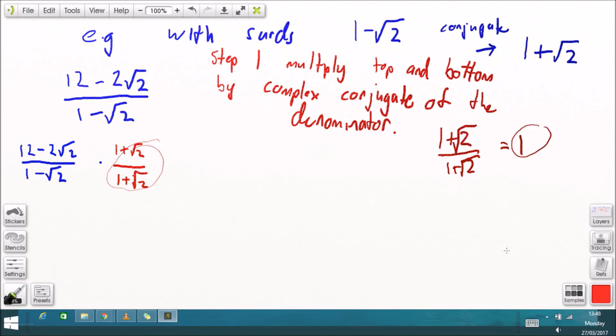one plus root two divided by one plus root two is one, anything divided by itself is one. If you multiply an expression by one you've not done anything to the expression, it'll look different but it'll have the same value